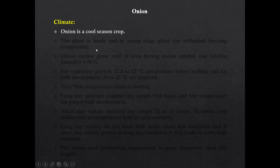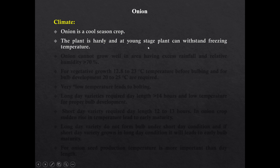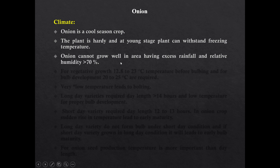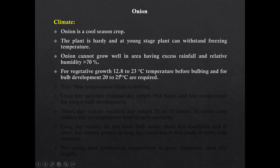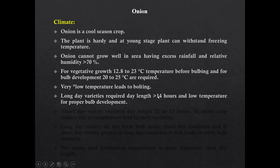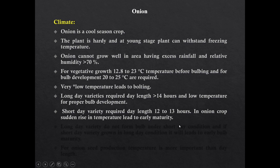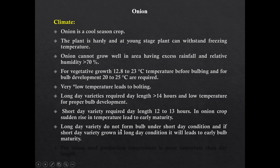Onion is a cool season crop. The plant is hardy and at the young stage it can withstand freezing temperature. Onion cannot grow well in areas having excess rainfall and relative humidity. For vegetative growth, 12.8 to 23 degree Celsius temperature is required before bulbing, and for bulb development 20 to 25 degree Celsius is required. Very low temperature leads to bolting in onion. Long-day varieties require day length of more than 14 hours and low temperature for bulb development. Short-day varieties require day length of 12 to 13 hours. Long-day varieties do not bulb under short-day conditions, and when short-day varieties are grown under long-day conditions, early bulb development and maturity occurs.